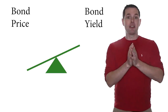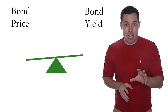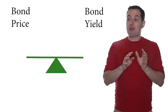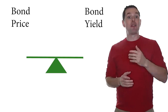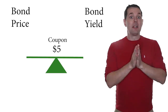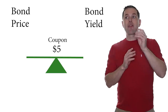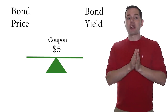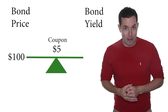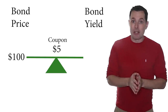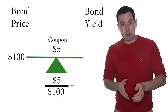This happens because generally the interest paid on a bond stays the same no matter what the current interest rate is out in the market. So if we have a five dollar coupon payment — sometimes they call this the interest payment — if the coupon payment is five dollars on a yearly basis and we pay a hundred dollars for that bond, if we take the five and divide it by a hundred, we get a five percent yield.